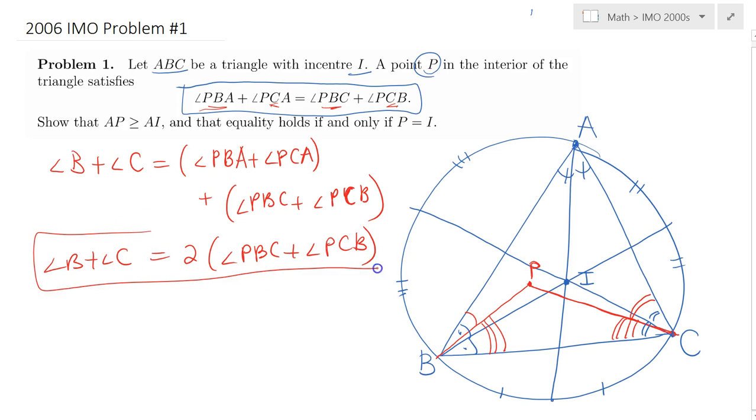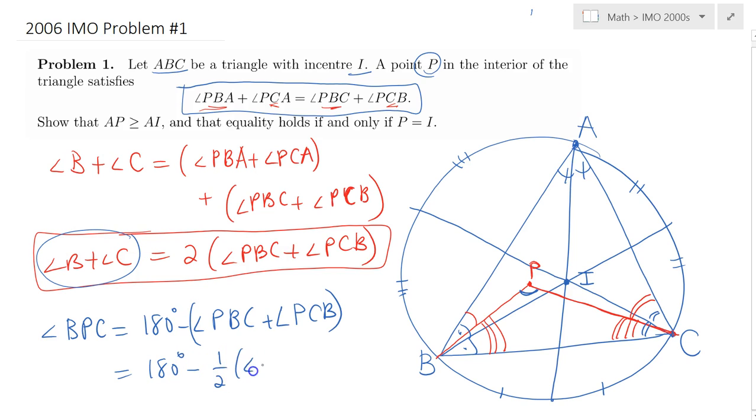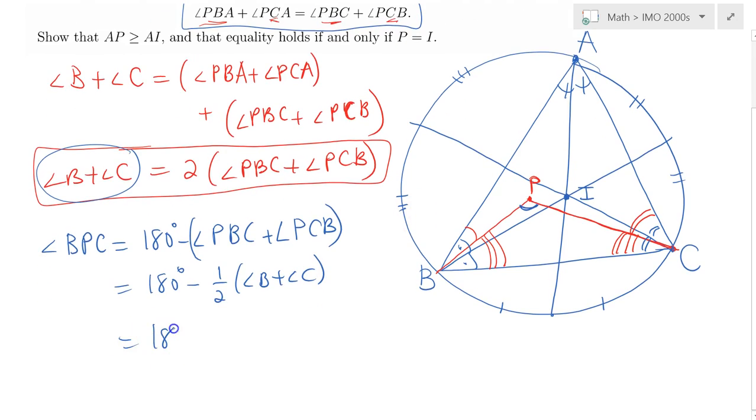Now let's compute a couple of angles, especially this angle here. I'm curious about angle BPC. Angle BPC is simply equal to 180 degrees minus angle PCB, but that's equal to one half of B plus C. So we have 180 degrees minus one half of angle B plus angle C. But angle B plus C can be replaced by 180 degrees minus angle A, and that would simply give us finally 90 degrees plus angle A over two.